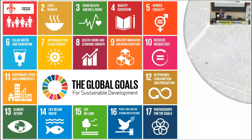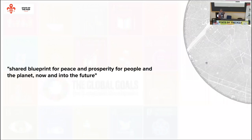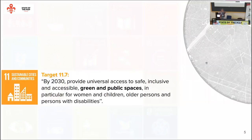It all started with the UN SDGs, and in particular with target 11.7, which states that by 2030 cities should provide universal access to safe, inclusive and accessible green and public spaces for all demographics, but especially for those more vulnerable.